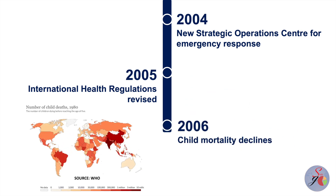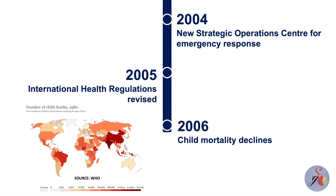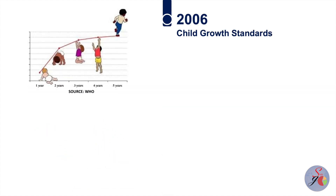In 2006, the number of children dying before their fifth birthday declined below 10 million for the first time in recent history. This achievement was a result of several global efforts aimed at improving maternal and child health. In the same year, WHO child growth standards were launched to help every child grow in an equitable way.